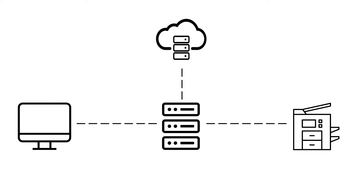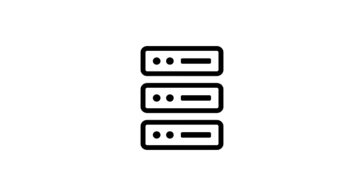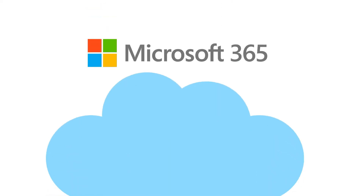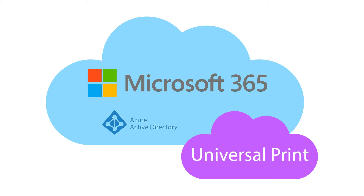Usually, a job is printed from a personal computer to the local server to the printer connected to the network. To print from the cloud, the document is downloaded to the server. To save cost and increase productivity, the print server can be removed and replaced by Microsoft 365 with the job processes of Universal Print and the support of Azure Active Directory.